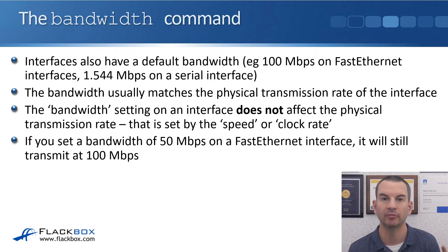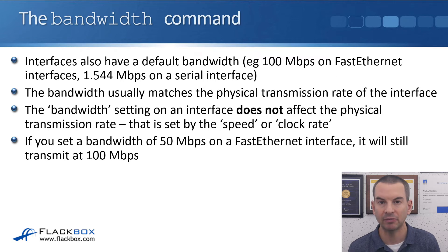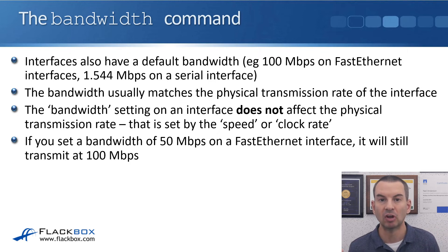Next we have the bandwidth command, which does not change the physical transmission rate. Interfaces have a default bandwidth — for example, 100 Mbps on Fast Ethernet interfaces and 1.544 Mbps on a serial interface — which matches their default speed and clock rate settings. The bandwidth does usually match the physical transmission rate by default, and normally as the administrator we want to leave it at that. The bandwidth setting on an interface does not affect the physical transmission rate; that is set by the speed or the clock rate.